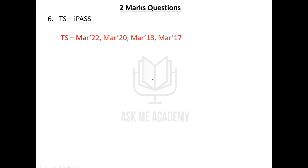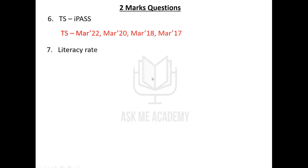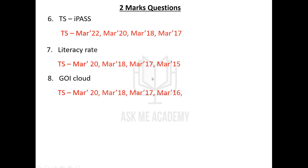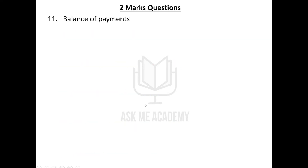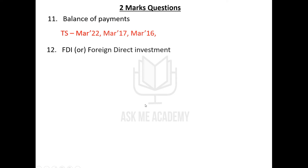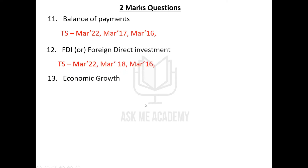Then comes TSI Pass — asked four times. Then: Literacy Rate — asked four times. Then: GOI Cloud — asked four times. Then: Cyber Apathy — asked four times. Then: Infant Mortality Rate — asked three times. Then: Balance of Payments — asked three times. Then: FDI or Foreign Direct Investment — asked three times. Then: Economic Growth — asked three times.